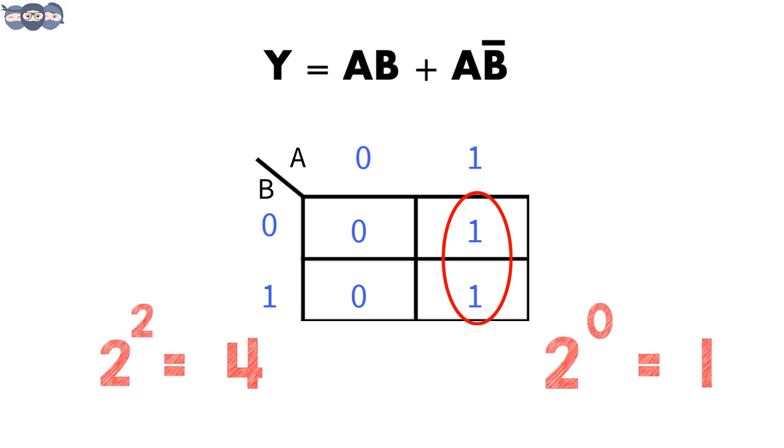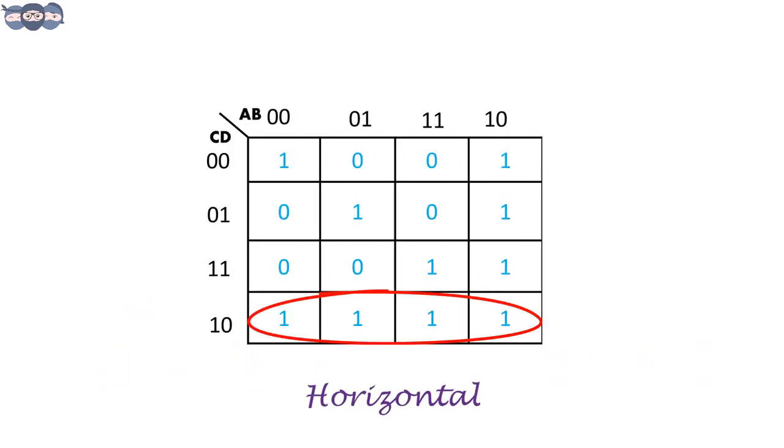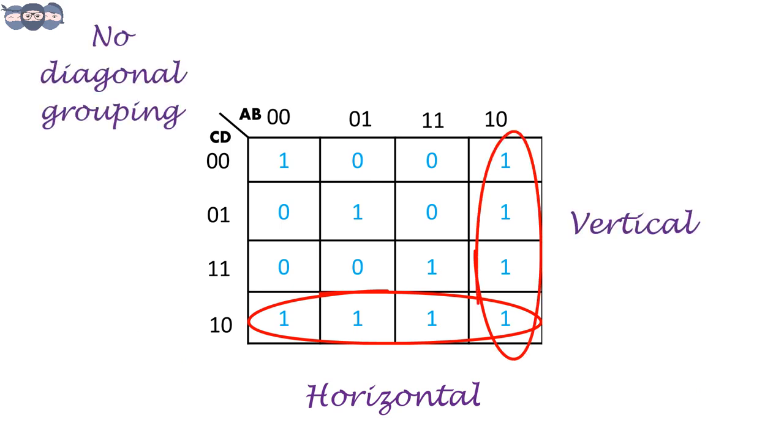For our example, there is only one group here. Groups can be horizontal or vertical. However, diagonal grouping is incorrect. The groups can overlap. The same elements may repeat in multiple groups to increase the size of the group. In this case, we can see that the groups are overlapping.